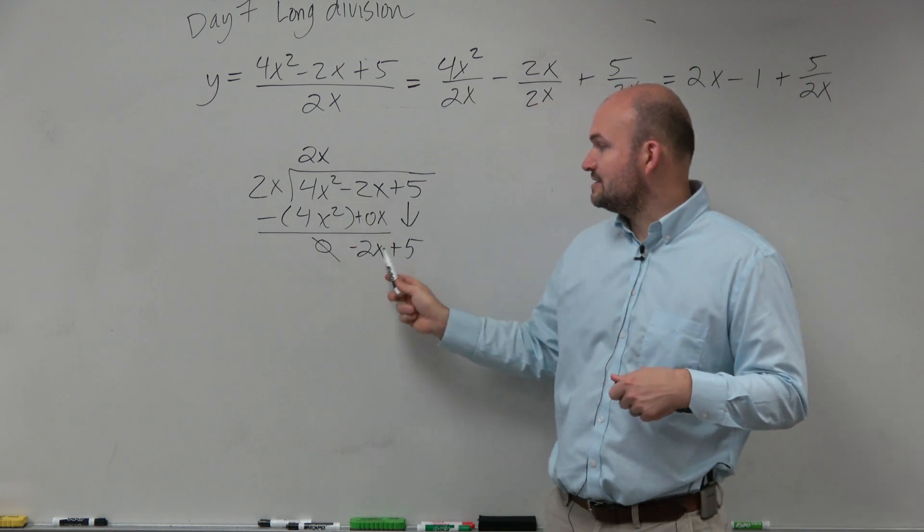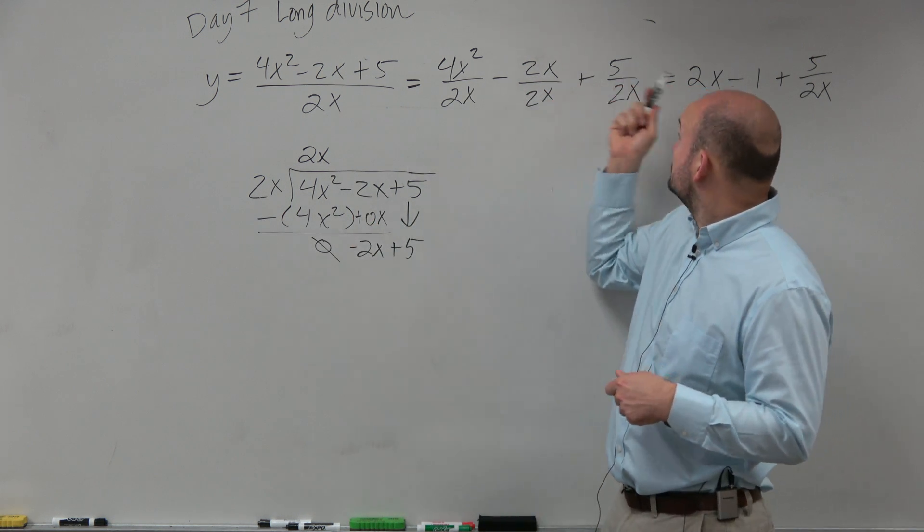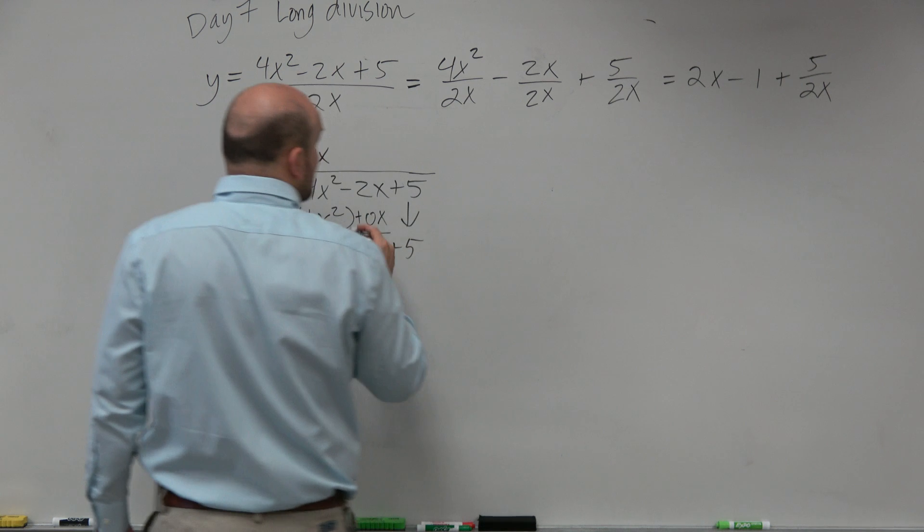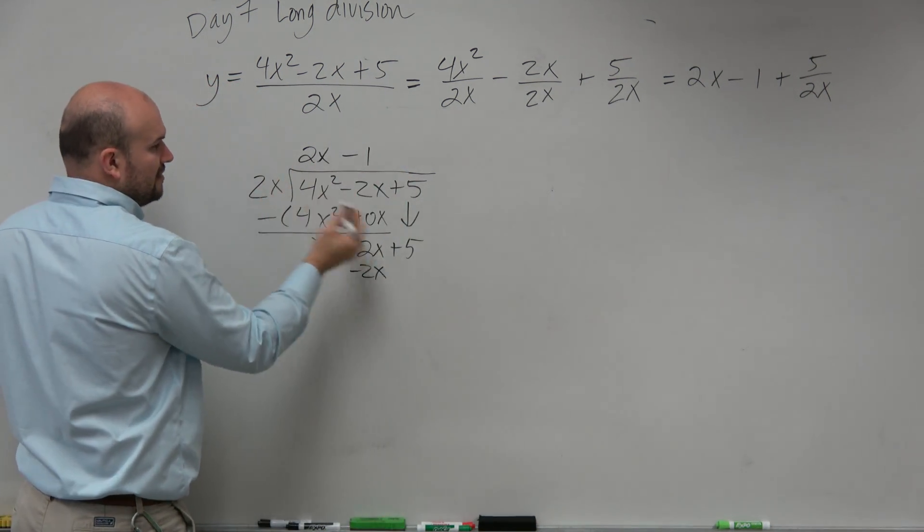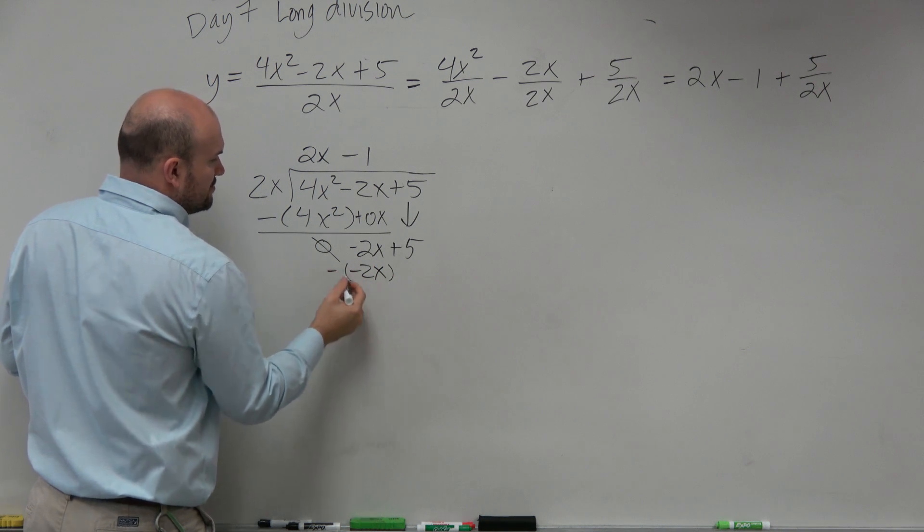How many times is 2x divided into negative 2x? Answer is negative 1. Negative 1 times 2x is a negative 2x. Subtract the rows.